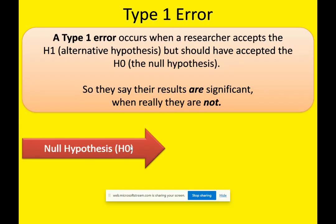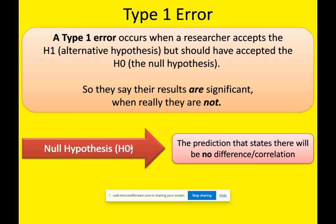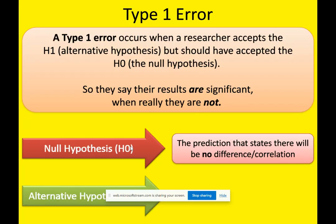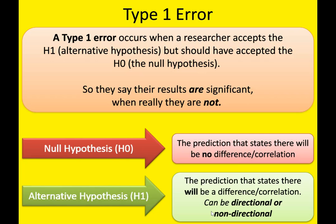Hypotheses come in pairs. You always have the null hypothesis, called the H0, and that is a prediction that states there will be no difference or no correlation — and that's where all investigations begin. And then you also have the alternative to the null, called the H1. The alternative hypothesis is the prediction that states there will be a difference or correlation.